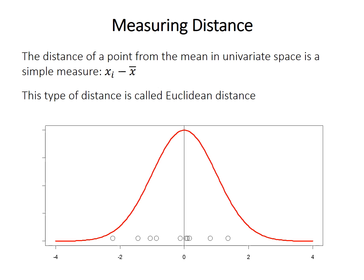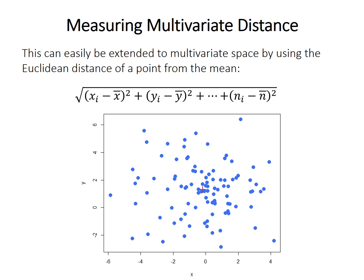Measuring distance in univariate or one-dimensional spaces is pretty straightforward. In many tests like the t-test, we want to know how far points are from the mean, so we take the value of the point minus the value of the mean. This is called Euclidean distance. Euclidean distance also applies in multivariate space. You may have calculated distance between two points on a graph in this manner, and we can extend it to an arbitrary number of dimensions in multivariate space with this formula.